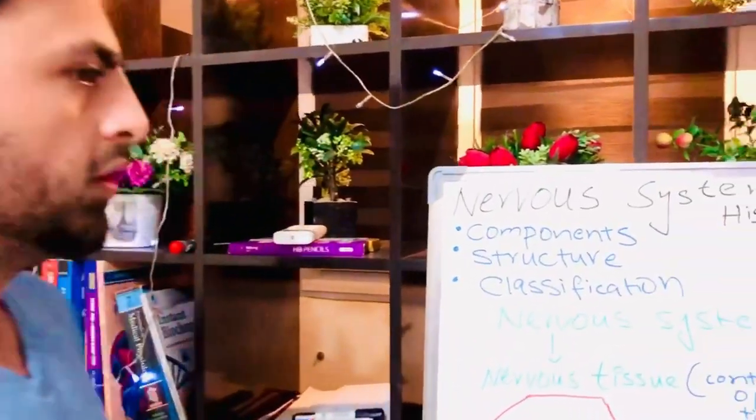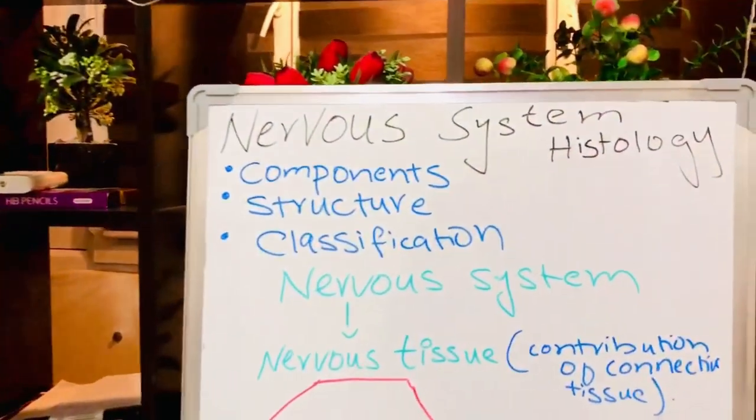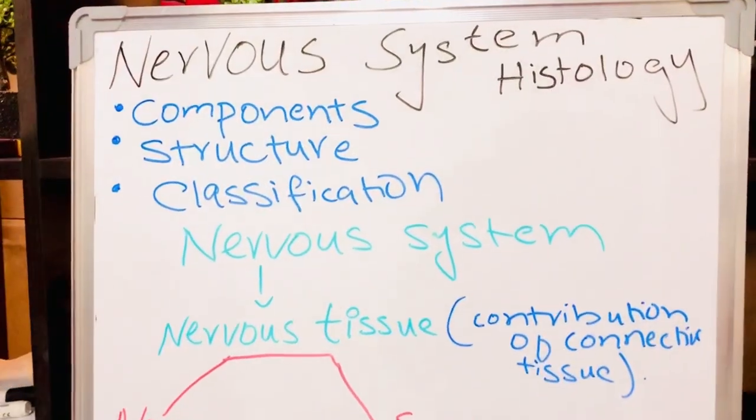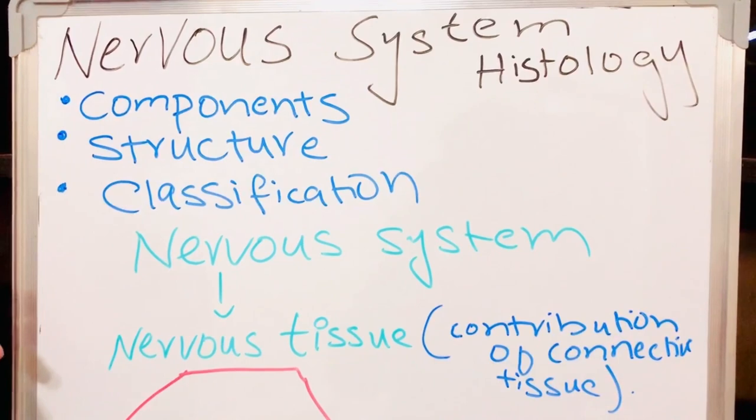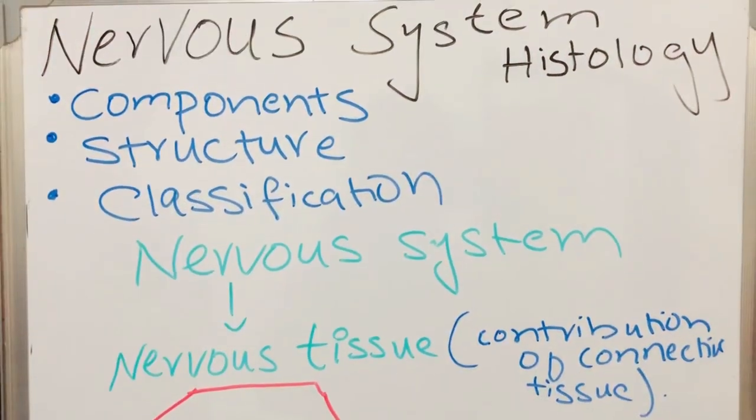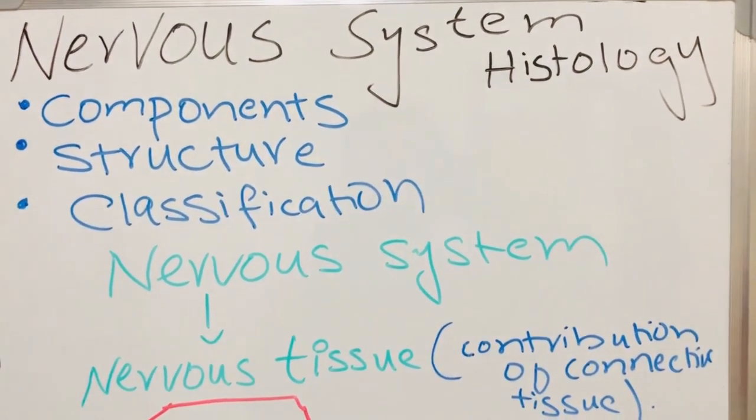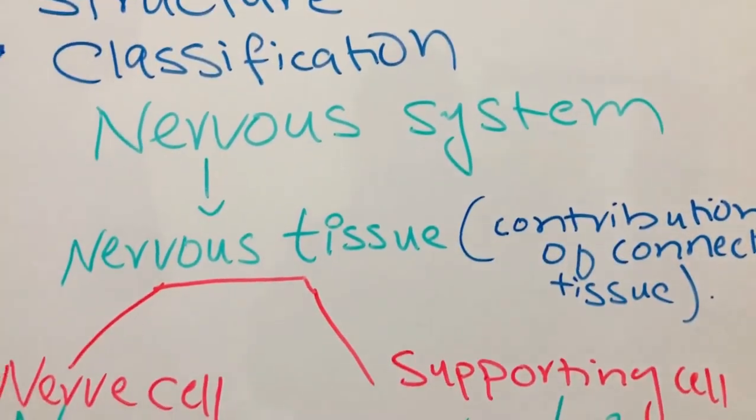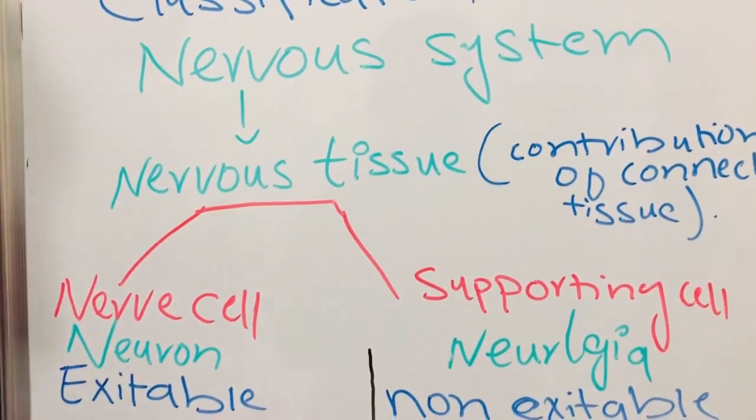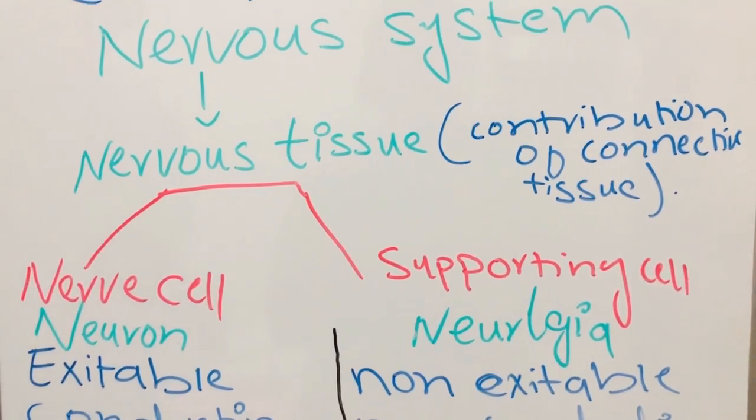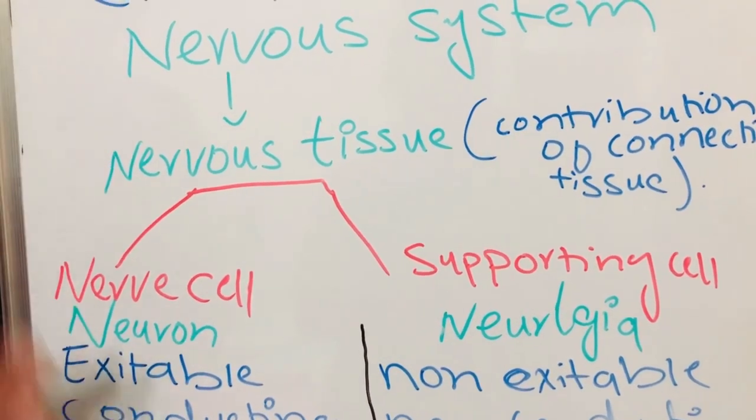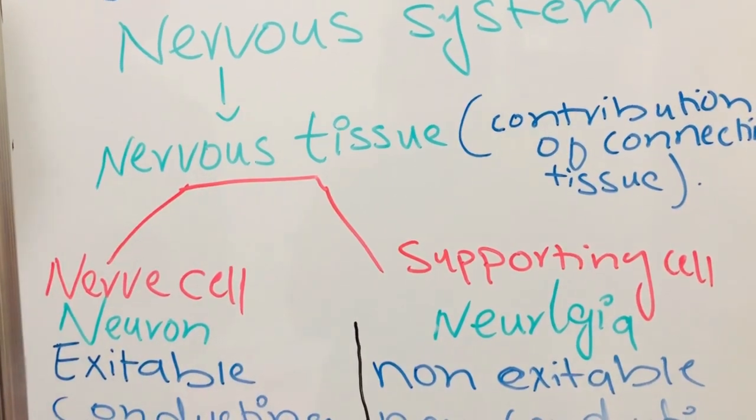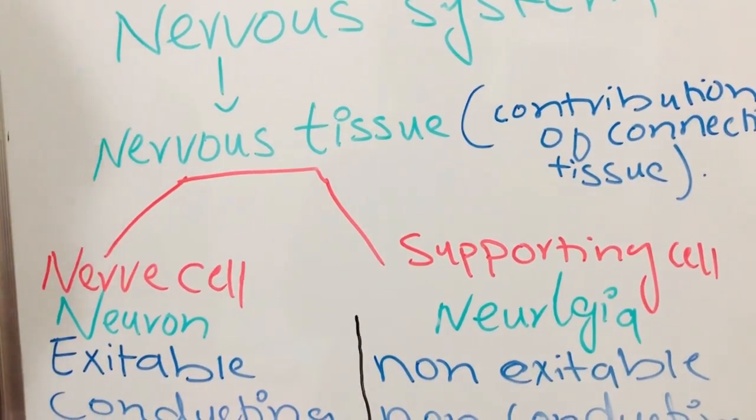Our outline of lectures are components of nervous system, structure of nervous system, and the classification of nervous system. Our nervous system is made up of nervous tissue itself, but along with that there is a lot of contribution of connective tissue. We have division of nervous tissue into two: one is nerve cell and other is supporting cell.